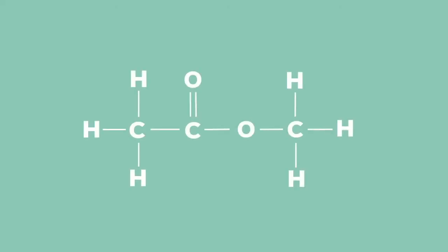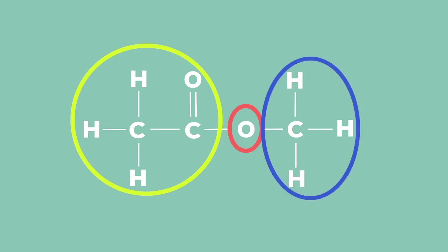This leaves us with a compound called an ester that is recognizable by the oxygen atom that joins the two carbon chains. The side with the double bond O is the chain that came from the carboxylic acid side, and the side without the double bond O is the chain that came from the alcohol side.